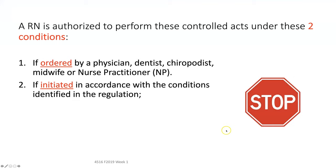An RN is authorized to perform these controlled acts if ordered by a physician, dentist, chiropodist, midwife, or nurse practitioner. In the acute care setting, it would be either a physician or a nurse practitioner. It also needs to be initiated in accordance with the conditions identified in the regulation — specific to each of the controlled acts.